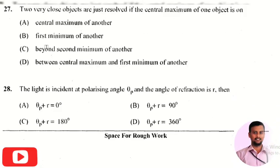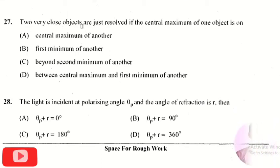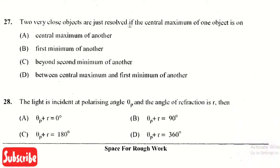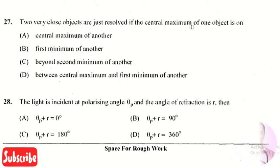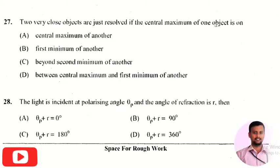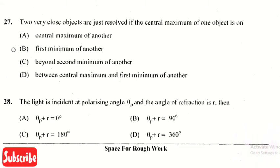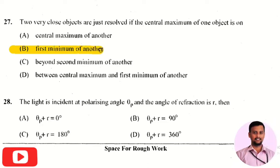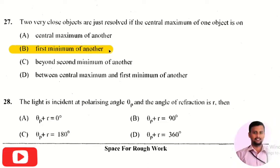The next question is: two very close objects are just resolved if the central maximum of one object is on — the right answer is option 2, that is the first minimum of the other.